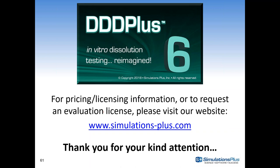A question about the USP-4 flow-through cell and dynamic media change: the media phases are still available in that model, though the options are a little less robust than for the normal USP-1 and USP-2 experiments. You do have the opportunity to change the pHs, and you can use those functionalities with dissolution phases in the USP flow-through experiment.